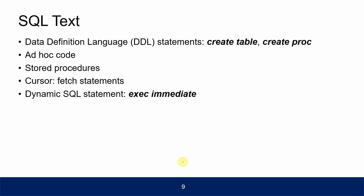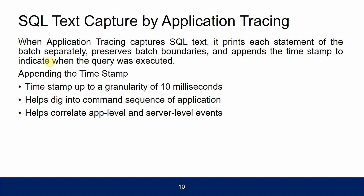The tracing scope also includes SQL text: DDL statements like CREATE TABLE and CREATE PROCEDURE, ad hoc code, stored procedures, cursors, fetch statements, dynamic SQL statements, and EXECUTE intermediates. When application tracing captures SQL text, it prints each statement of the batch separately, preserves batch boundaries, and appends a timestamp to indicate when the query was executed.